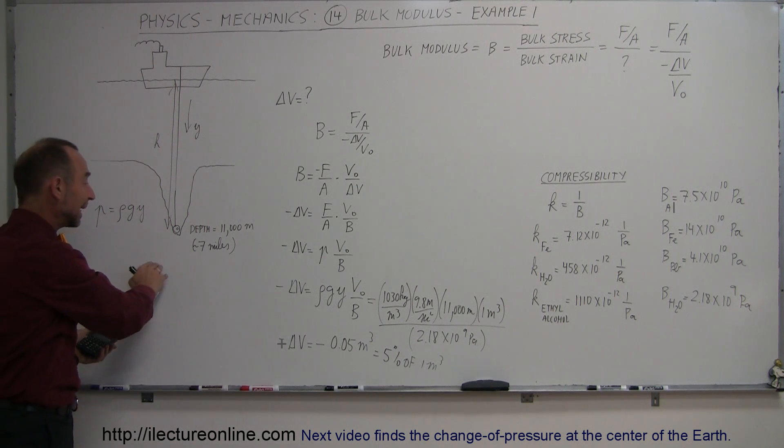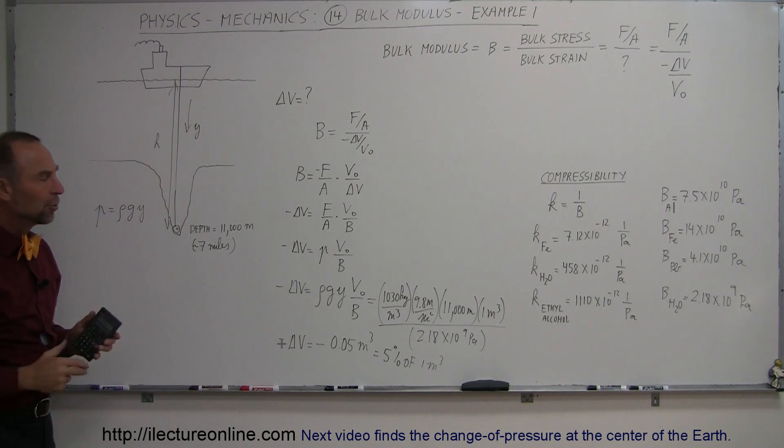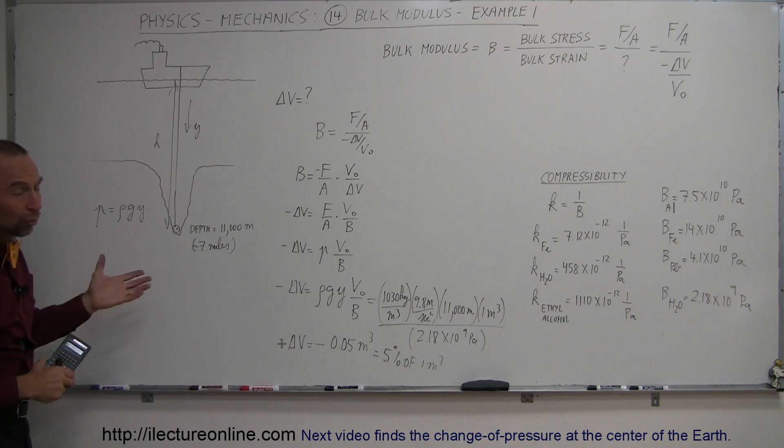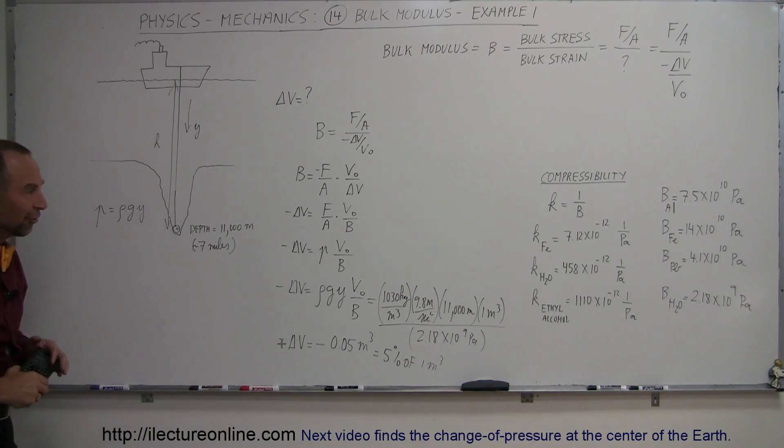So, 1 cubic meter at the surface of the water pushed down to the bottom is now only 0.95 cubic meters. So, the new volume is only 95% of the original volume when it was up there. That's how we use the bulk modulus to calculate things like that. So, we'll show you another example or two to get a better feel for it, but here's a very nice one.